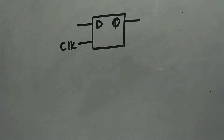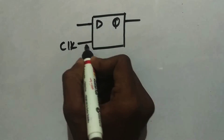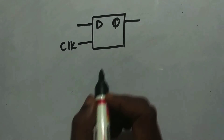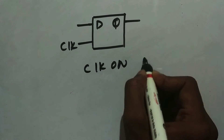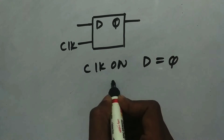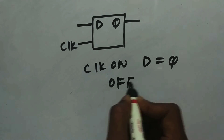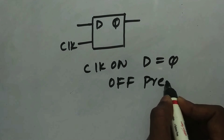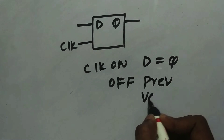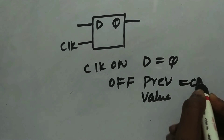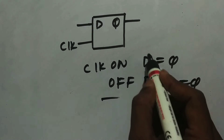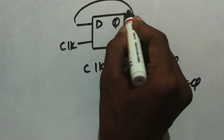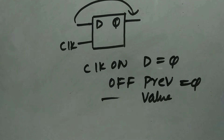This is how a D latch looks. This is a positive level-sensitive latch, which means whenever the clock is on, D equals Q. Whenever the clock is off, the previous value equals Q. That means it acts as a storage element when it's turned off; otherwise it lets the inputs pass through to Q. I hope you have understood this — let's draw the timing diagram for D latch.